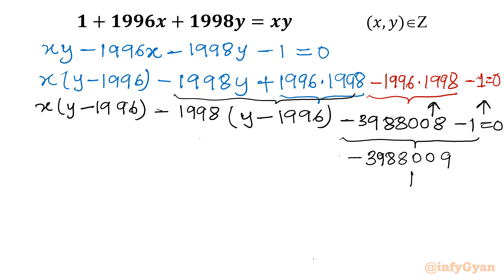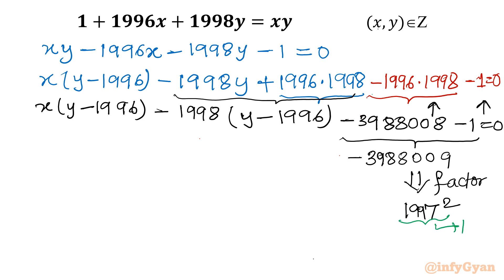Now I will go for factorization. If you find the factor of 3988009, it turns out to be 1997 whole squared. And one very interesting thing about this number: 1997 is a prime number. This is the key point of this problem.